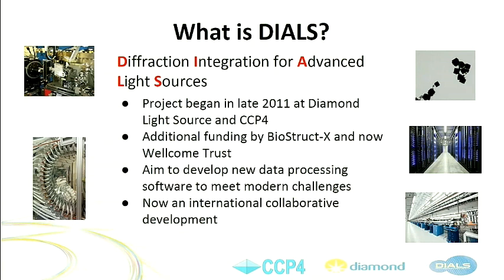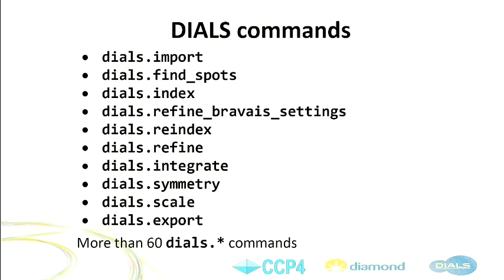Experiments now run faster — you have more images in less time — and computers now use more parallel processing, so a new program that processes data differently was needed. That's what DIALS was created for. The traditional way to run DIALS is by typing commands in a terminal, which is not particularly attractive for everybody, but it's still the most powerful way. These are the most commonly used commands.